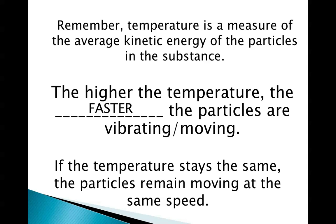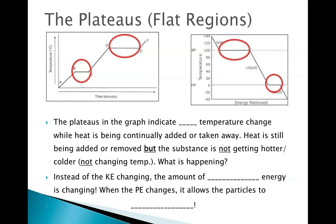So what actually is occurring as time passes? The other part of our graphs are considered the plateaus, or the flat regions. The plateaus in the graph indicate no temperature change while heat is being continually added or taken away. Heat is still being added or removed, but the substance is not getting hotter or colder. Instead of kinetic energy changing, the amount of potential energy is changing instead.